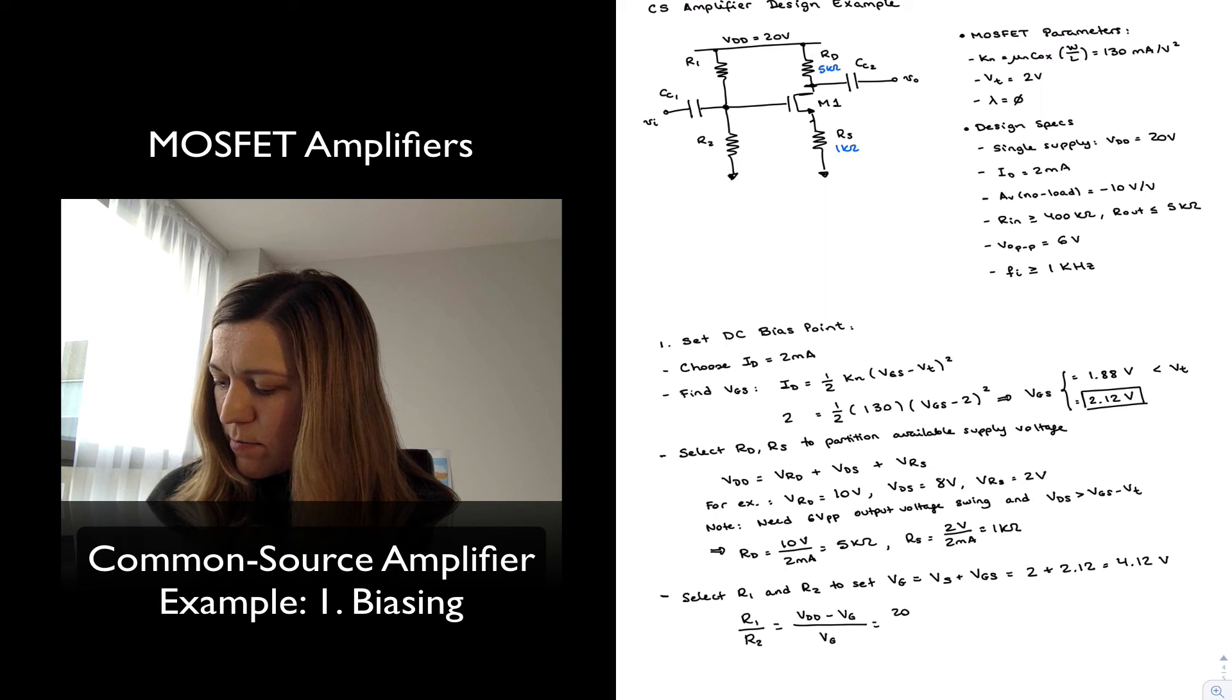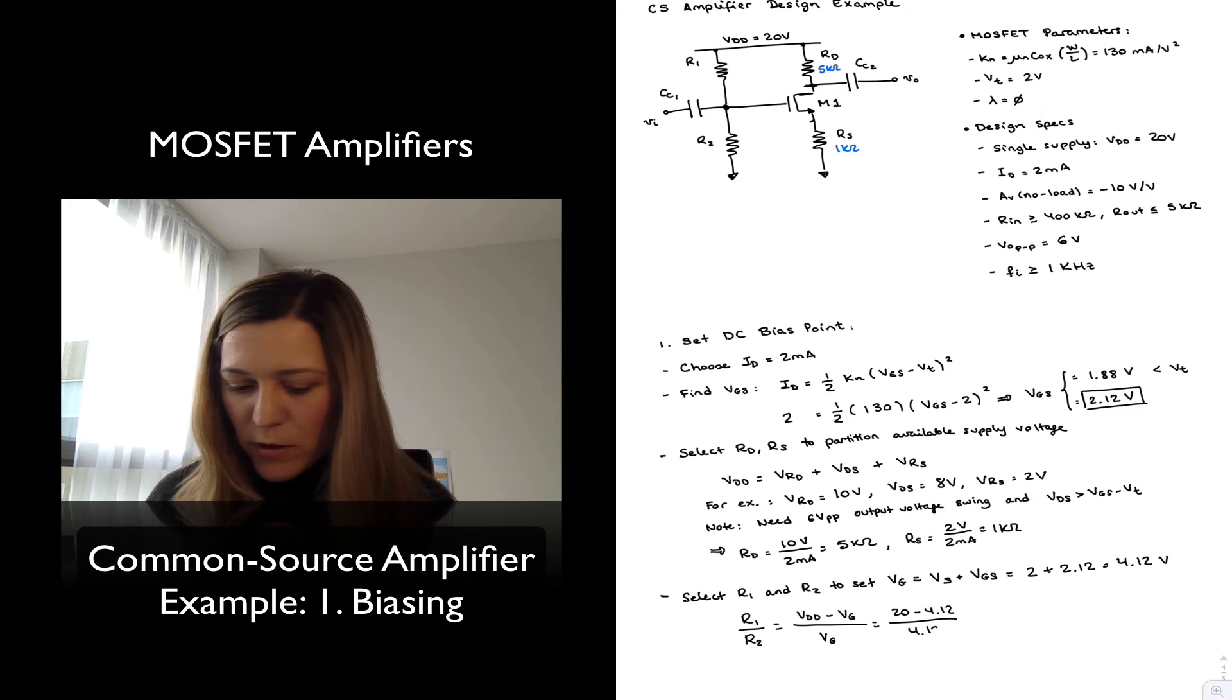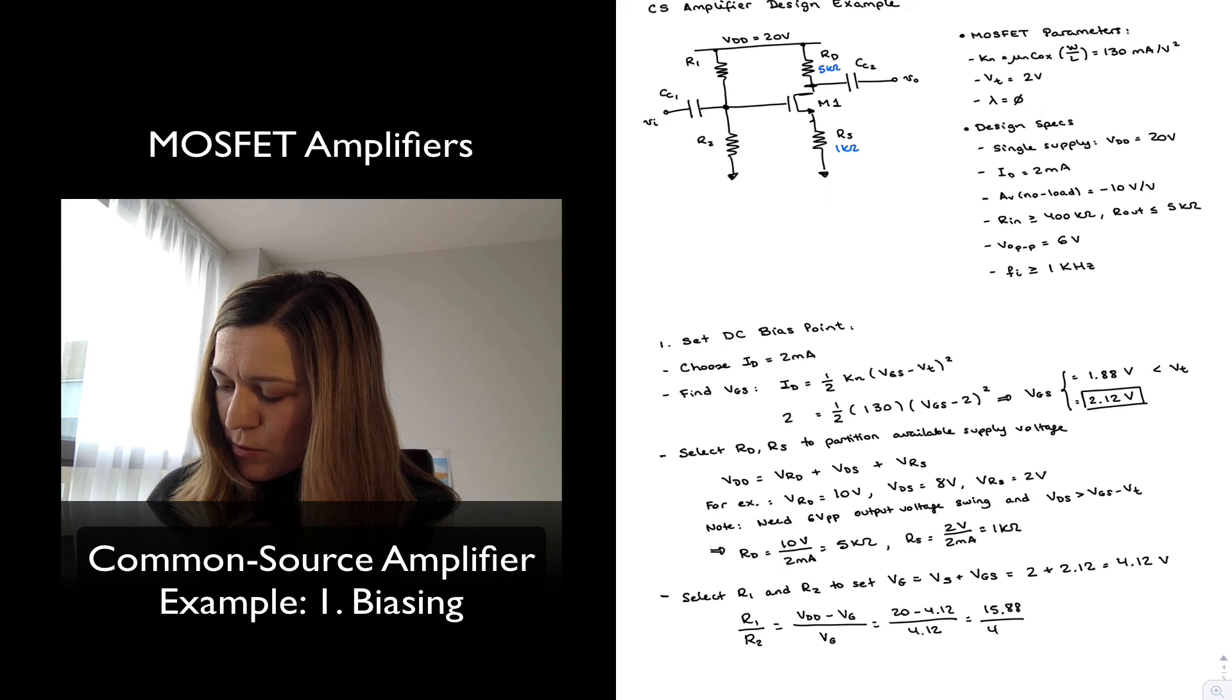That's 20 minus 4.12 divided by 4.12, which is 15.88 divided by 4.12, or 3.85.